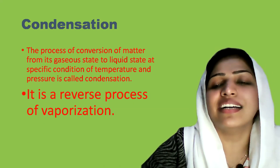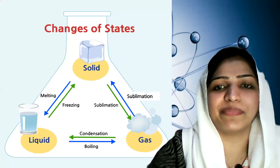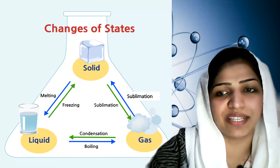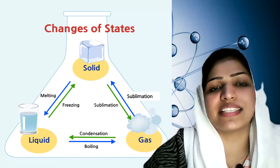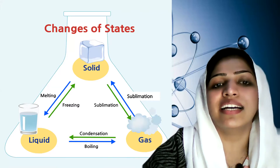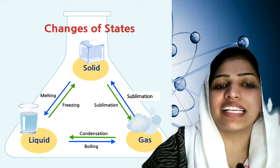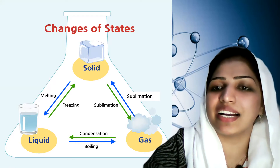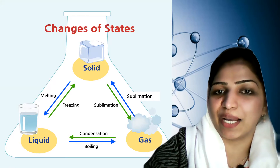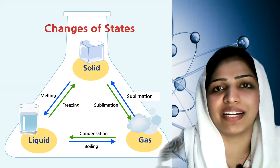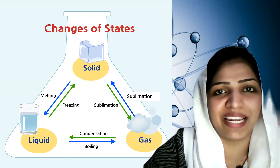Let's summarize the state changes: solid to liquid is melting, liquid to solid is freezing or solidification, liquid to gas is boiling or vaporization, gas to liquid is condensation, and solid to gas is sublimation. Now let's learn about latent heat.